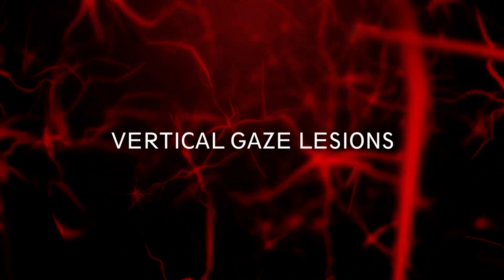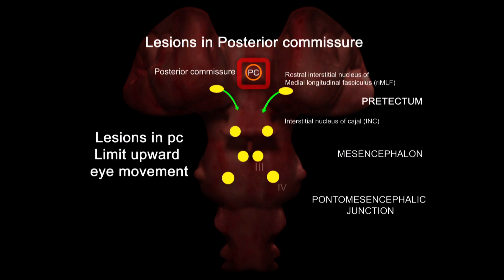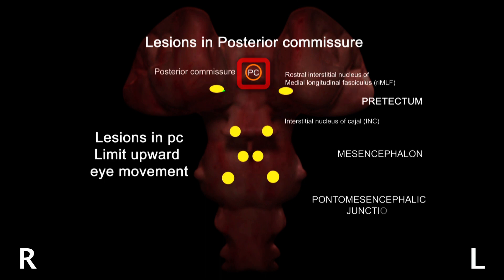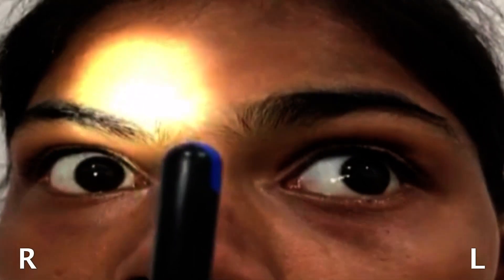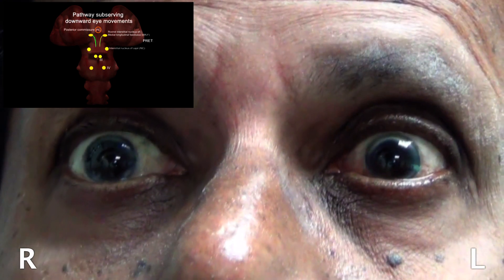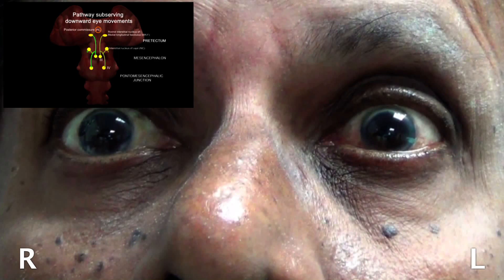Vertical gaze lesions are due to disruption of the vertical gaze pathway at the thalamo-mesencephalic junction or at the midbrain. Dorsal midbrain syndrome, also called Parinaud syndrome, is due to lesions of the posterior commissure where fibers from the interstitial nucleus of Cajal cross over to subserve the oculomotor sub-nuclei. Features include absence of upgaze with lid retraction and nystagmus on attempted upgaze, as seen in a patient with supranuclear vertical upgaze paresis. Pupillary light-near dissociation is also present with sparing of pre-tectal fibers. Isolated down gaze paresis is much less common.